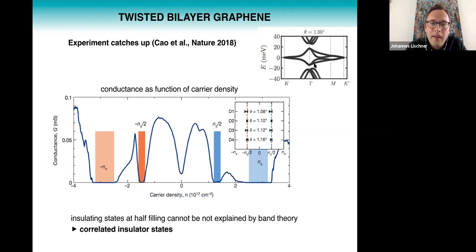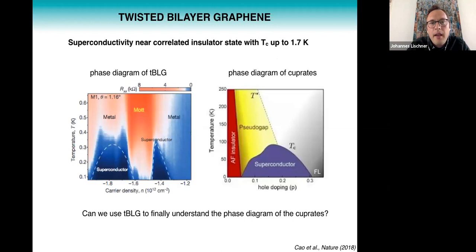But there are other regions where the conductance vanishes, and that is basically at plus minus ns over two, which is when you have half filled the flat bands or half emptied them. And in that case, band theory predicts the system to be a metal, so you can't explain this insulator using band theory. That's why it's called a correlated or a Mott insulator state.